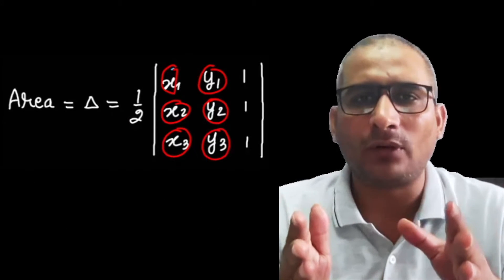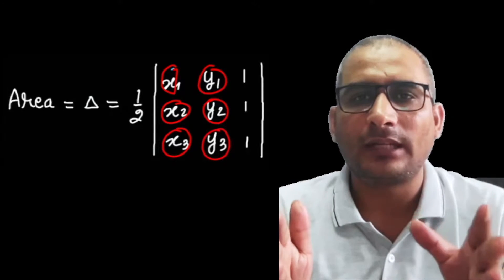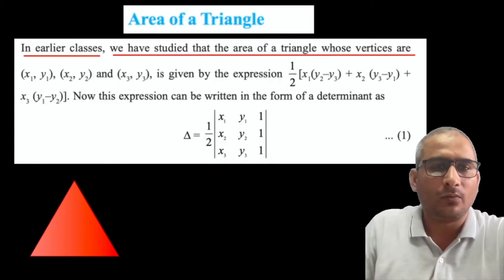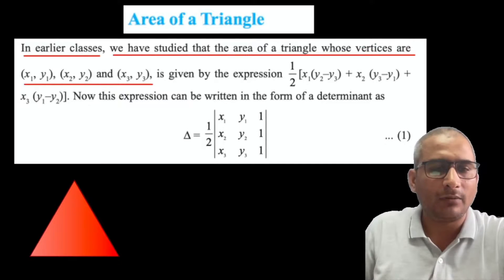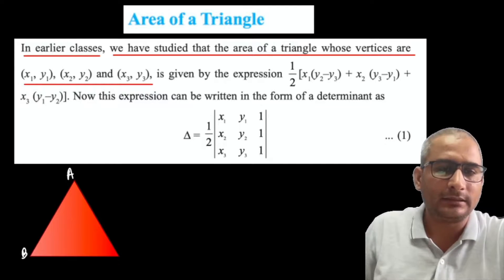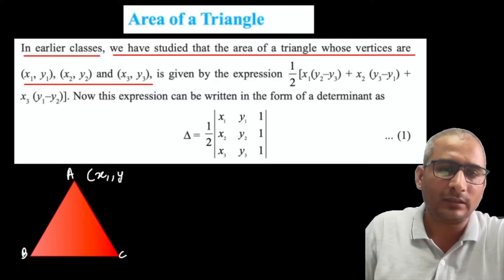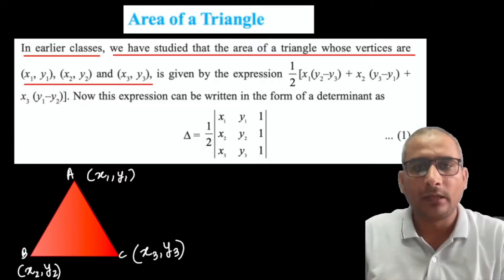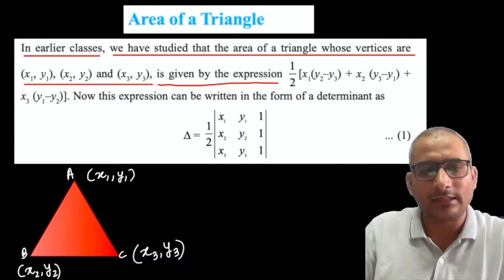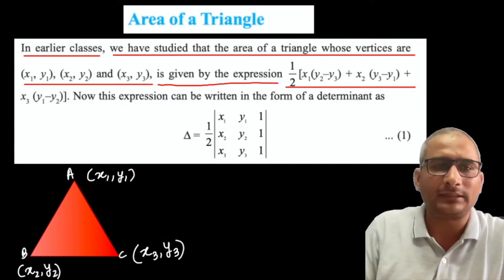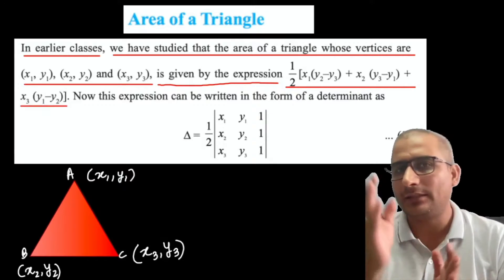Now we are going to study a new formula for area of triangle in which a determinant is used. In earlier classes we studied that the area of a triangle whose vertices are (x1, y1), (x2, y2), (x3, y3) — suppose this triangle has vertices A at (x1, y1), B at (x2, y2), and C at (x3, y3). The formula from class 10 is: half times x1(y2 - y3) plus x2(y3 - y1) plus x3(y1 - y2).